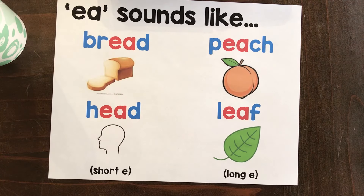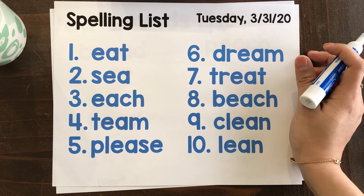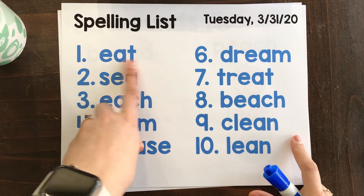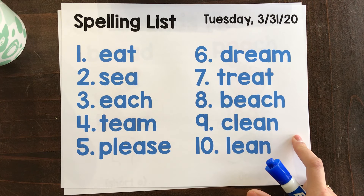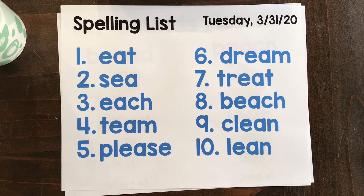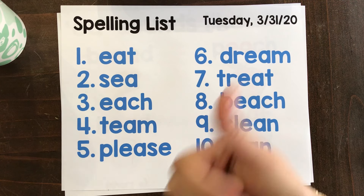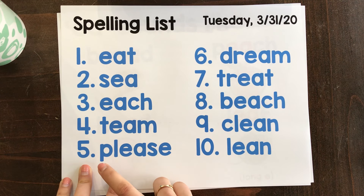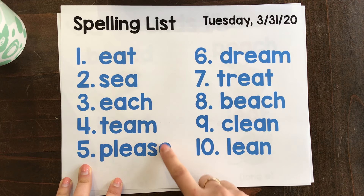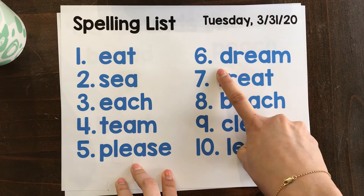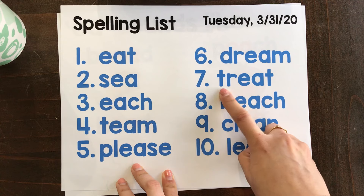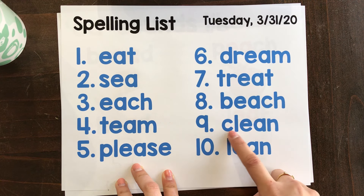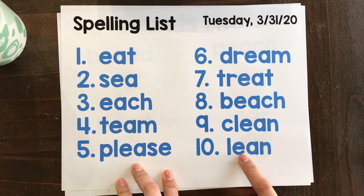This is our spelling list this week. All of these words have EA that sounds like long E. The first word is EAT. Then EACH. TEAM. PLEASE — don't forget there's a silent E at the end. Consonant blend D-R: DREAM. Consonant blend T-R: TREAT. BEACH. CL-EAN: CLEAN. And L-EAN: LEAN.